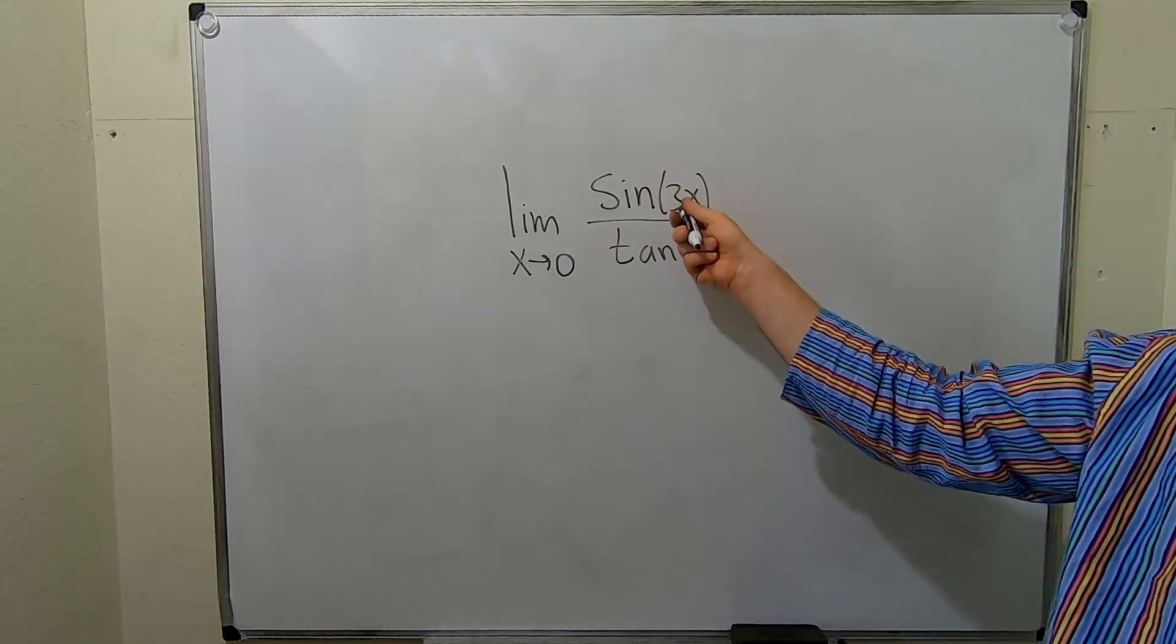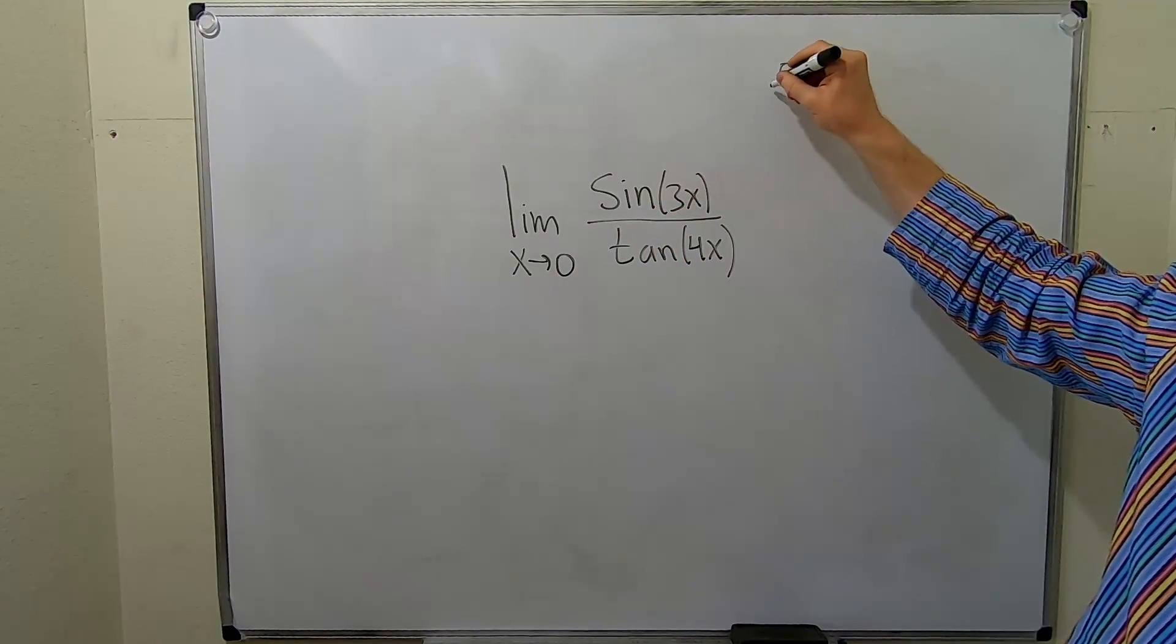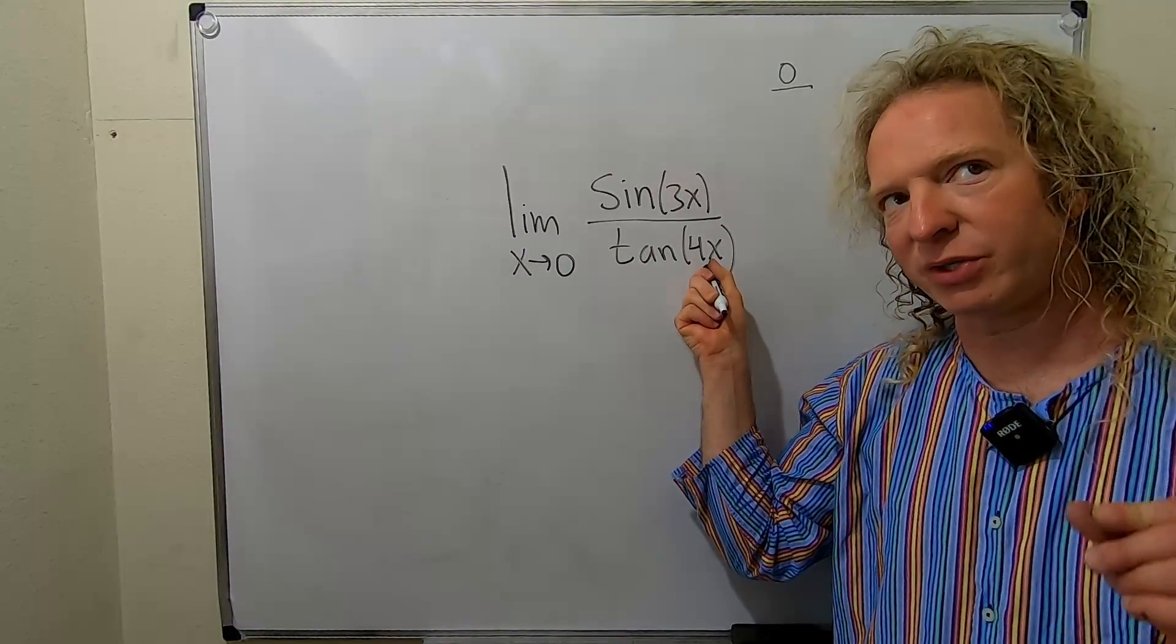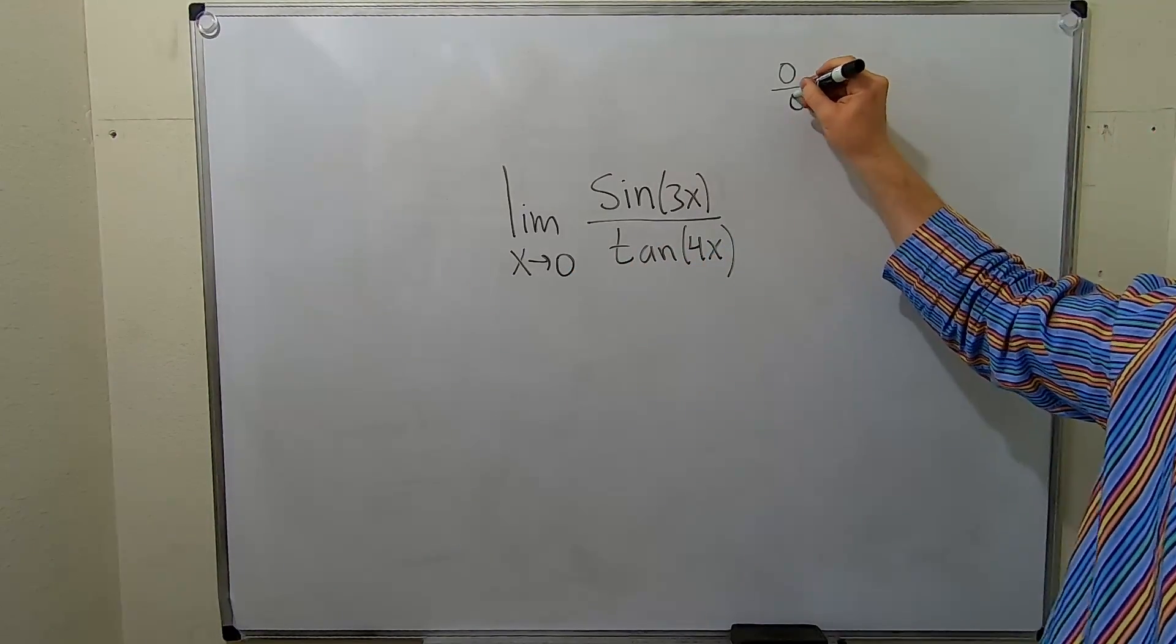If you plug in 0 here, you get sine of 0, which is 0. And if you plug in 0 here, you get the tangent of 0, which is also 0. So you get 0 over 0.